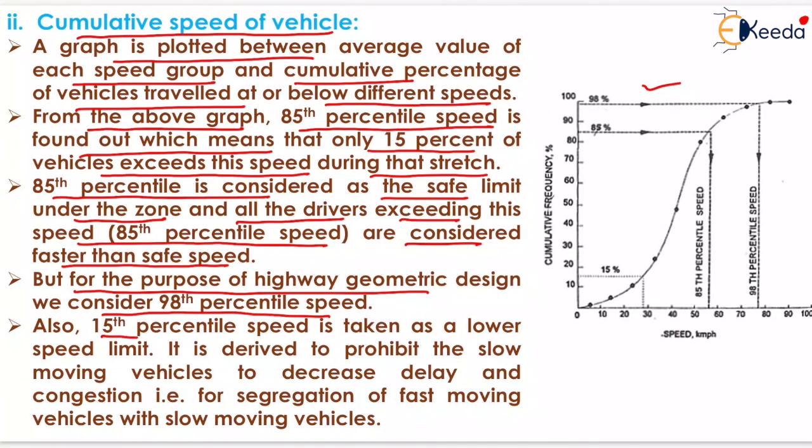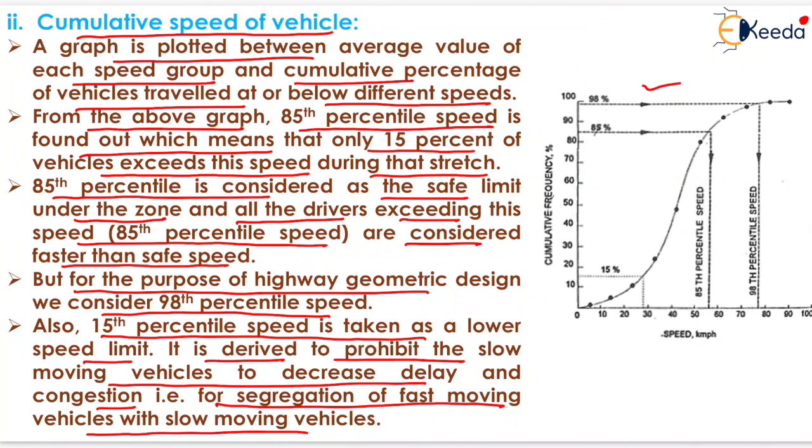Also, 15th percentile speed is taken as a lower speed limit. It is derived to prohibit the slow moving vehicles to decrease delay and congestion. That is for segregation of fast moving vehicles with slow moving vehicles.